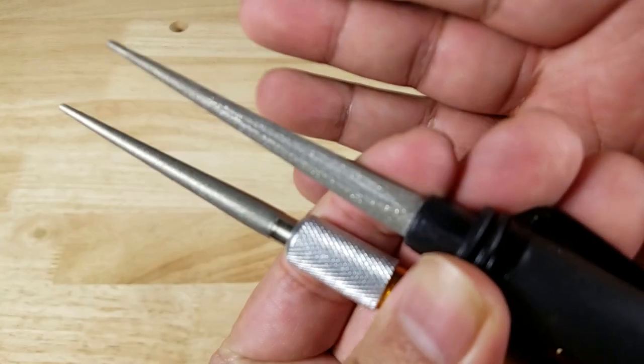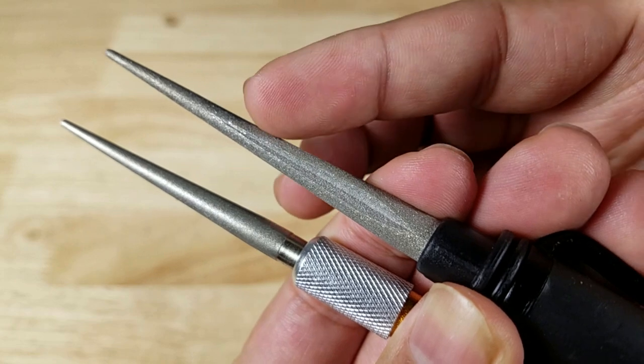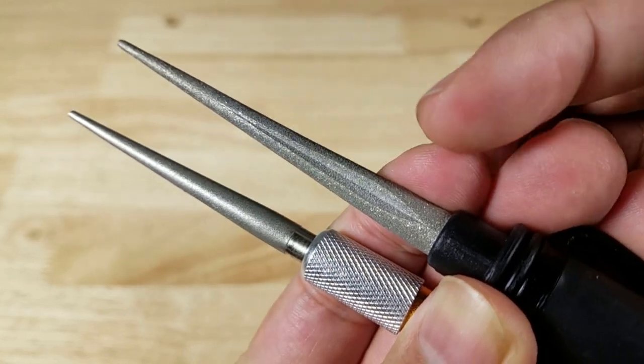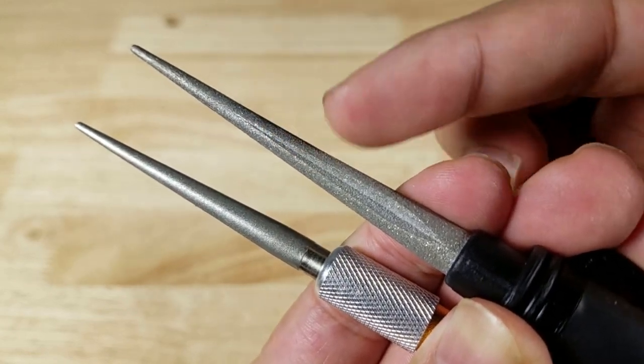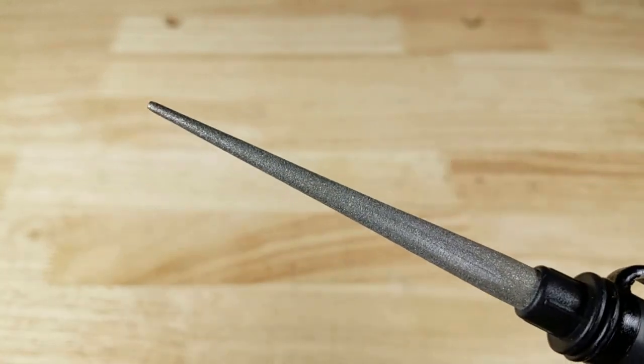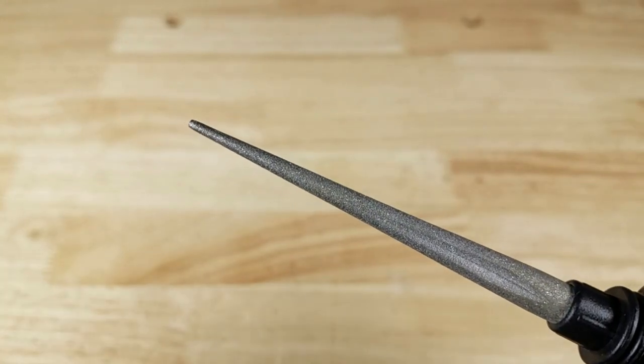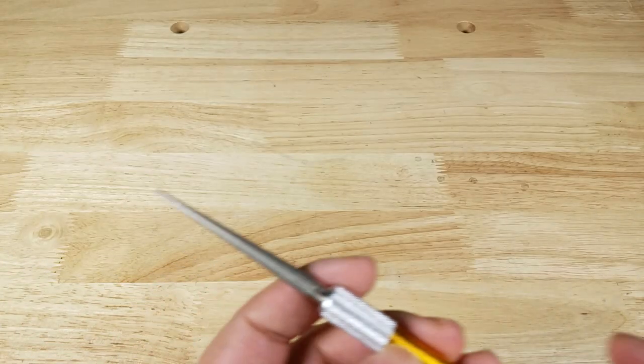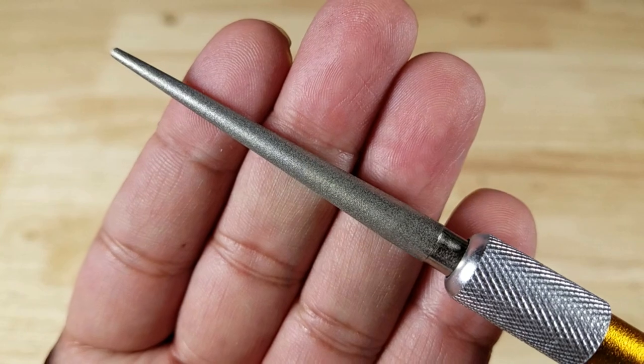All right, just for comparison sakes here is the Schrade diamond rod sharpener compared to the Smith. You can see just how much more coarse this rod is compared to the Smith. So you would use this if you needed to remove a lot of steel like if you had a chip on that knife edge. But for just regular knives that you're trying to bring that edge back, the 400 grit is perfect.